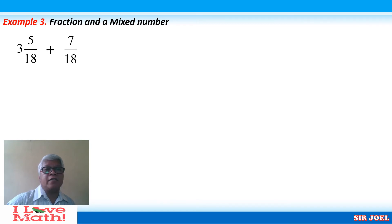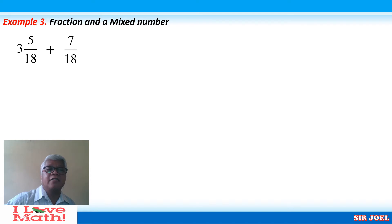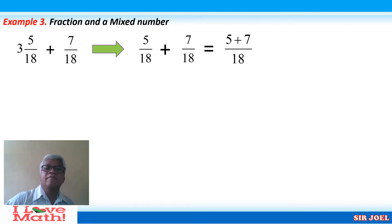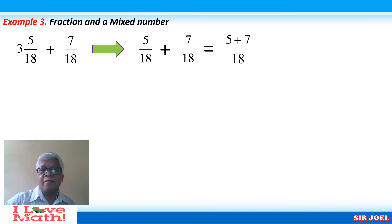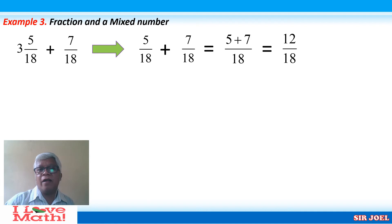Our next example is adding a fraction and a mixed number once more. The given is 3 and 5 over 18 plus 7 over 18. Since denominators are the same, they are similar fractions. Copy the denominator 18 and add the numerators 5 and 7. We add the fractional parts first: 5 over 18 and 7 over 18. The sum of 5 and 7 is 12, so our temporary answer is 12 over 18.